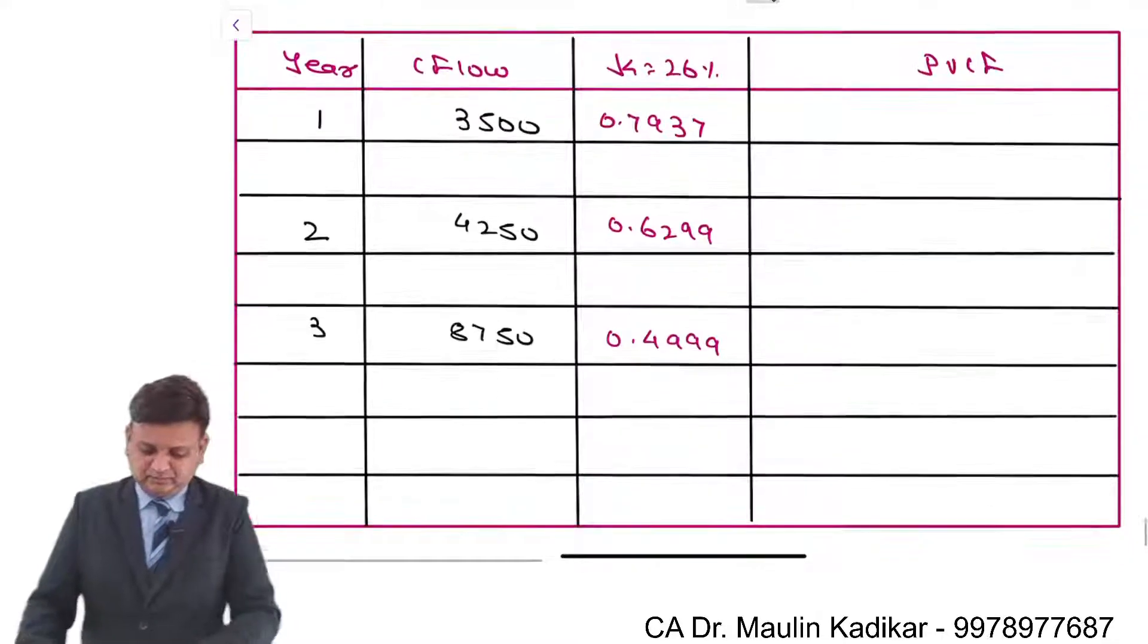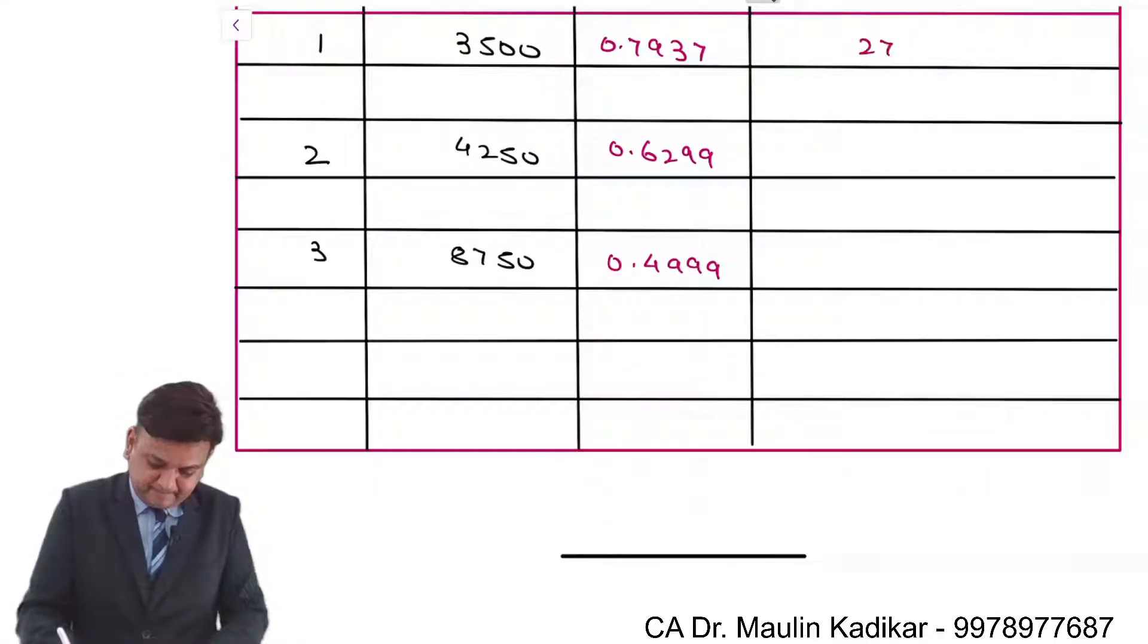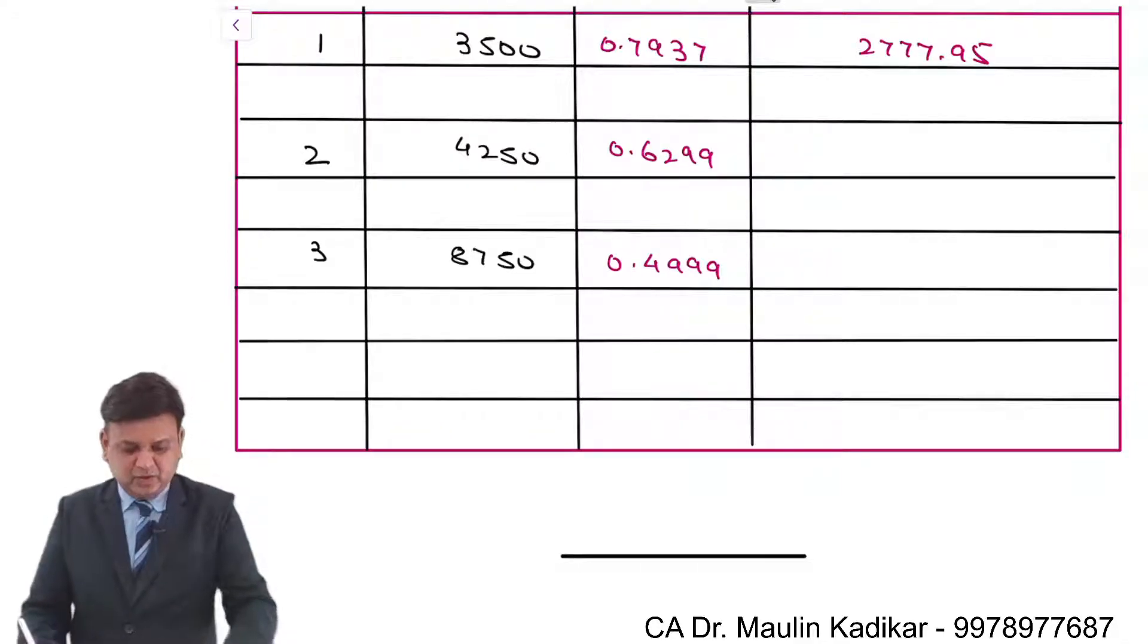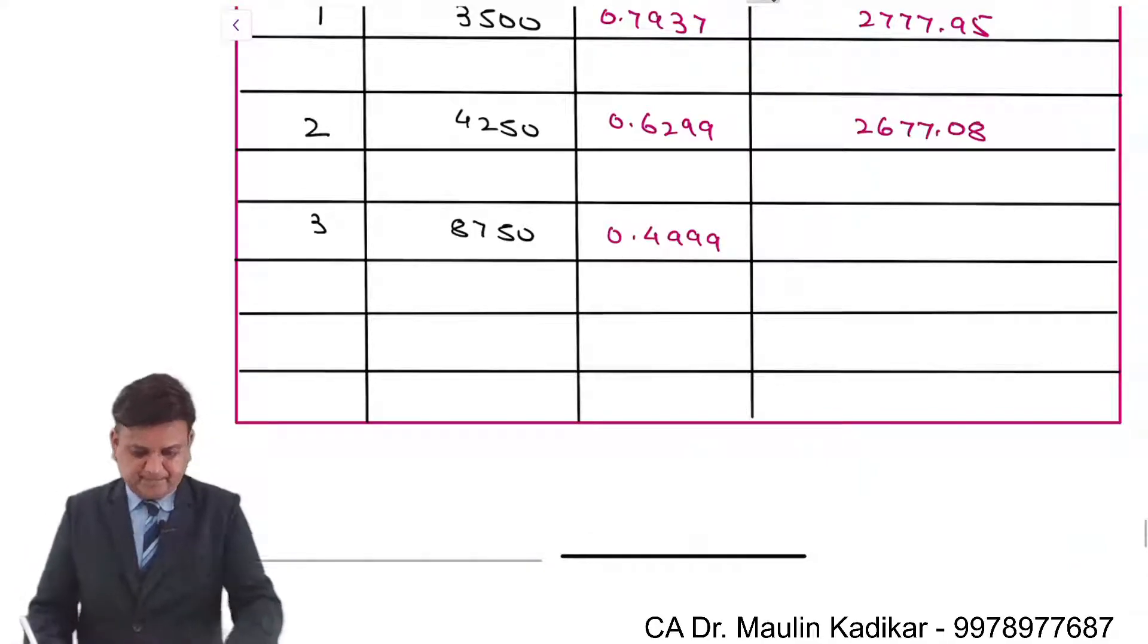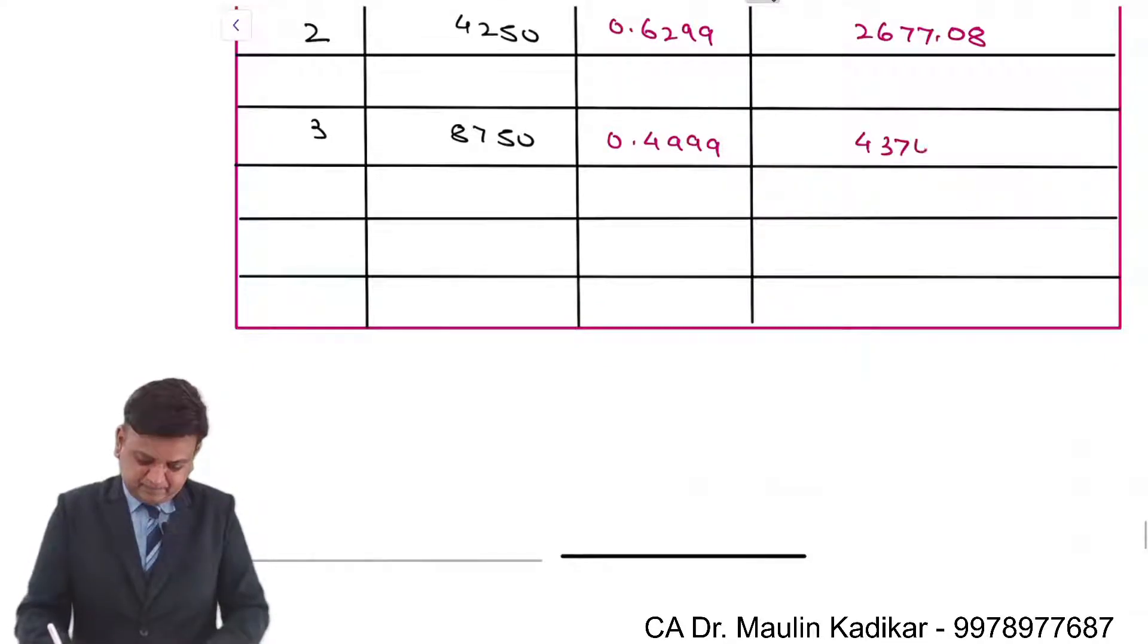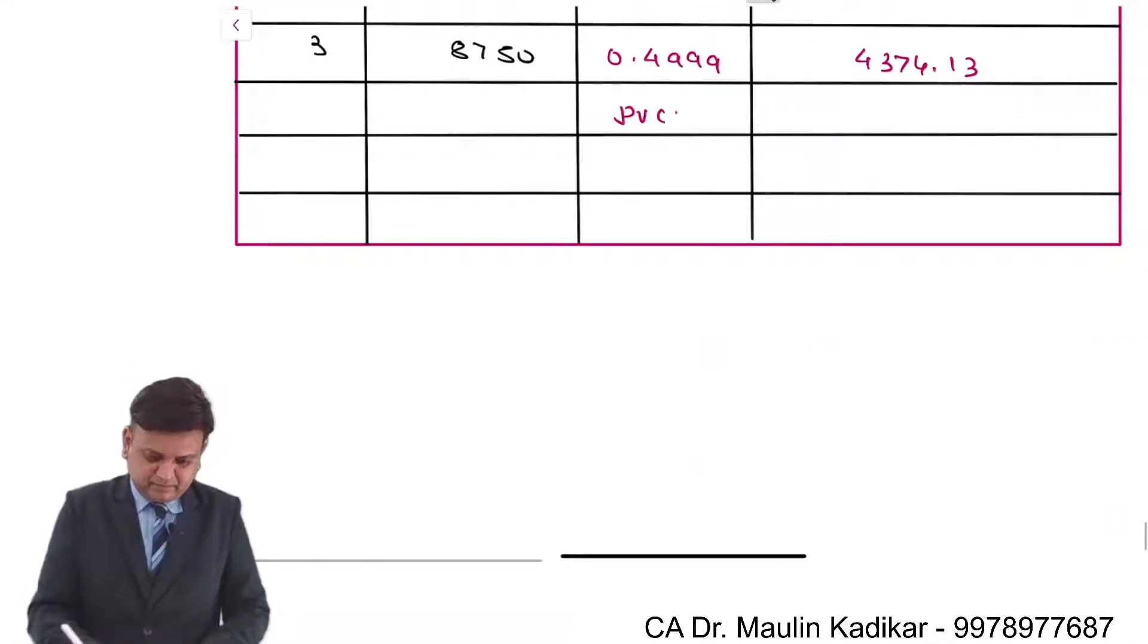So 3500 × 0.7937, so 2777.95. 4250 × 0.629, 2677.08. Present value of the cash flow, 9829.16.